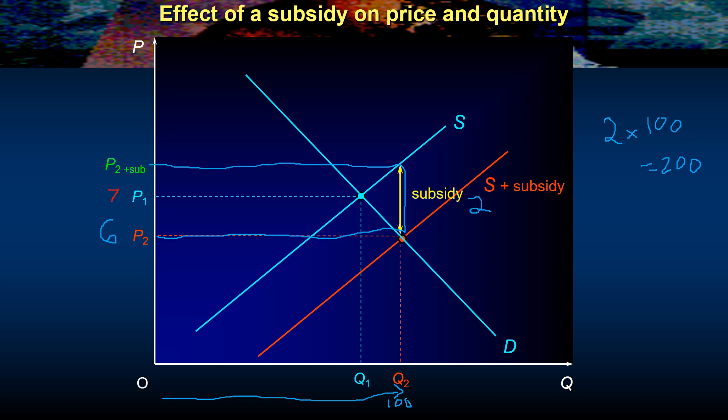So the government are spending this much money, this 200, and the question we're asking here is the incidence of the subsidy. Who gets the benefit of this 200? Now if you were a consumer you would see the benefit through a lower price and if you were the producer you would see the benefit through higher profits.